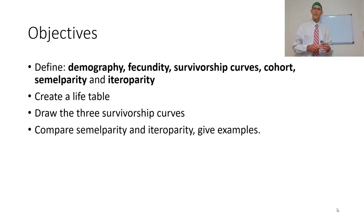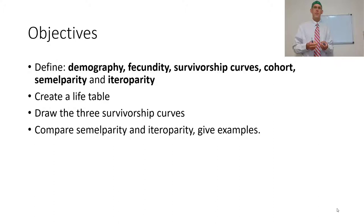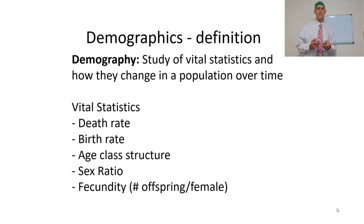The objectives here are defining demography, fecundity, survivorship curves, what is a cohort, and what are the differences between semelparity and iteroparity. Be able to create a life table and be able to draw the three different types of survivorship curves. Compare semelparity and iteroparity and be able to give examples.